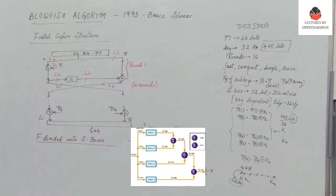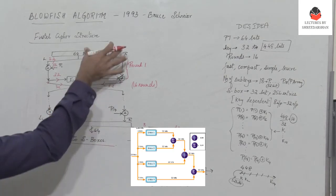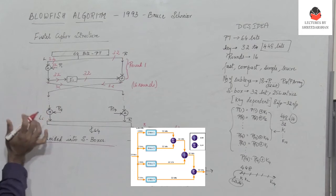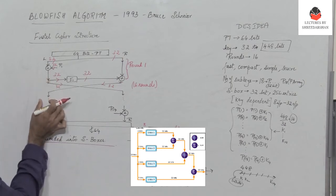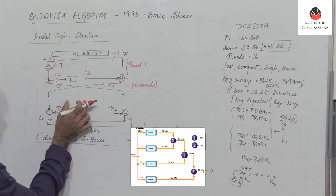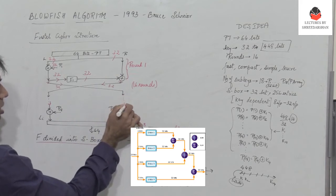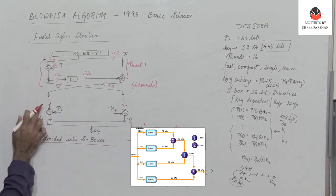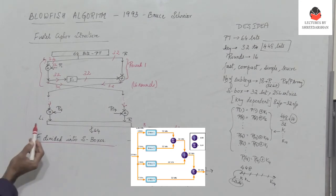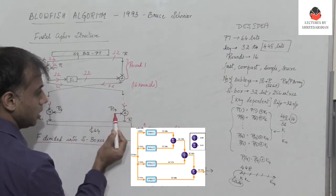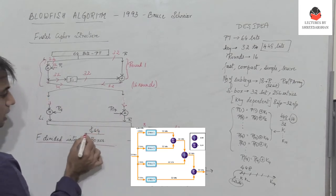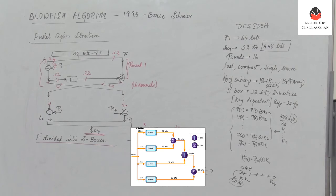After one round the outputs are swapped and the process repeats for 16 rounds total. In the final 16th round, the left half is XORed with P16, passed through F16, and XORed with the right half. After 16 rounds, the left half is XORed with P18 and the right half is XORed with P17, producing the final 64-bit ciphertext.